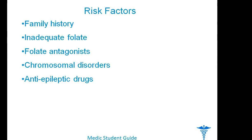Let's talk about the risk factors. Family history is very important because one type of malformation puts other family members at risk of all types of defects. Neural tube defects may occur as part of a number of different syndromes and chromosomal disorders. Inadequate folate during pregnancy might be a cause, which may be due to inadequate folate intake, use of folate antagonists, genetic factors causing abnormal folate metabolism, or anti-epileptic therapy with drugs like sodium valproate and carbamazepine.